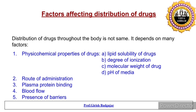Distribution of drugs throughout the body is not the same everywhere — it depends on many factors. These factors affecting distribution include: physical and chemical properties of drugs such as lipid solubility, ionization, molecular weight, and pH of the media; route of administration; plasma protein binding; blood flow; and presence of barriers.